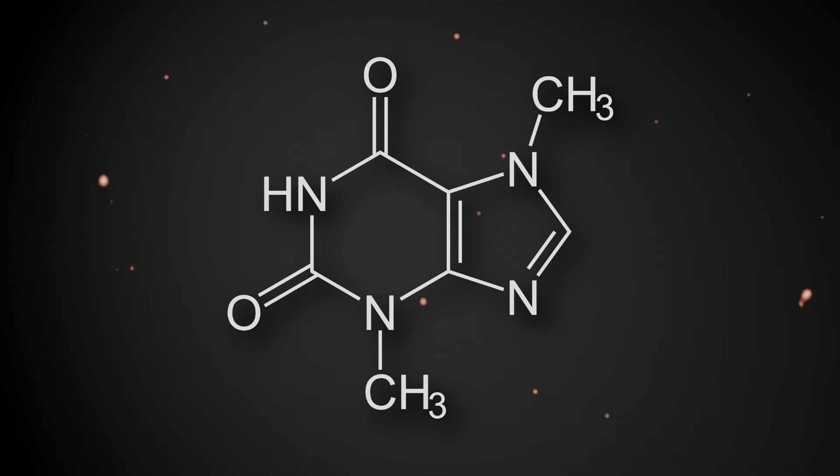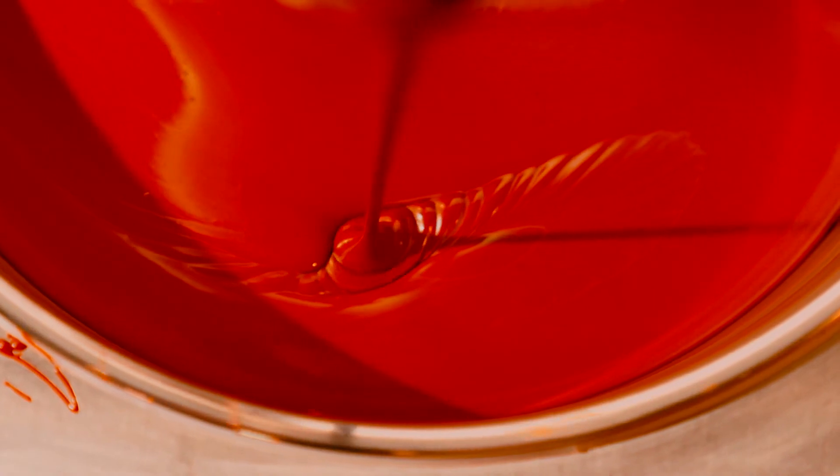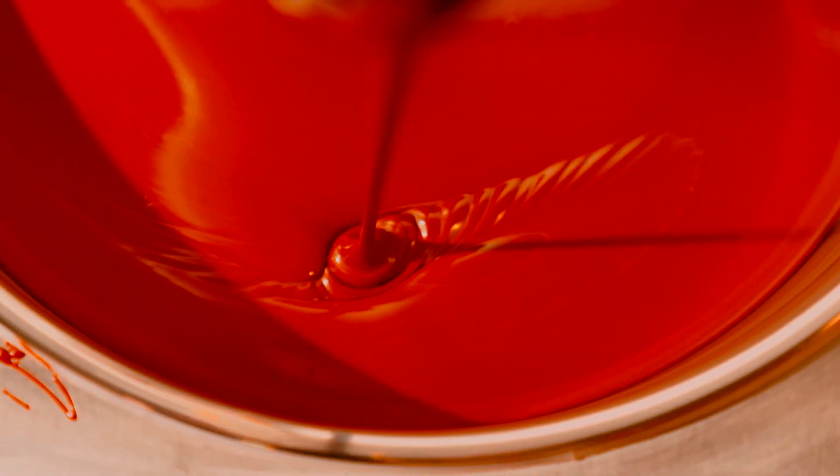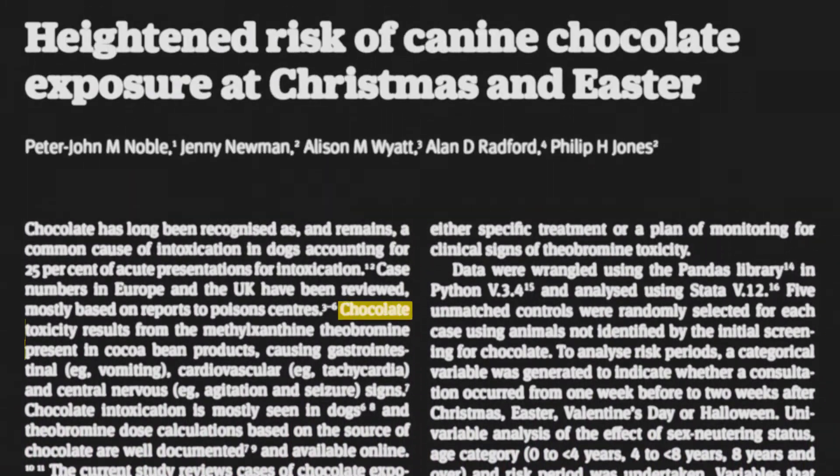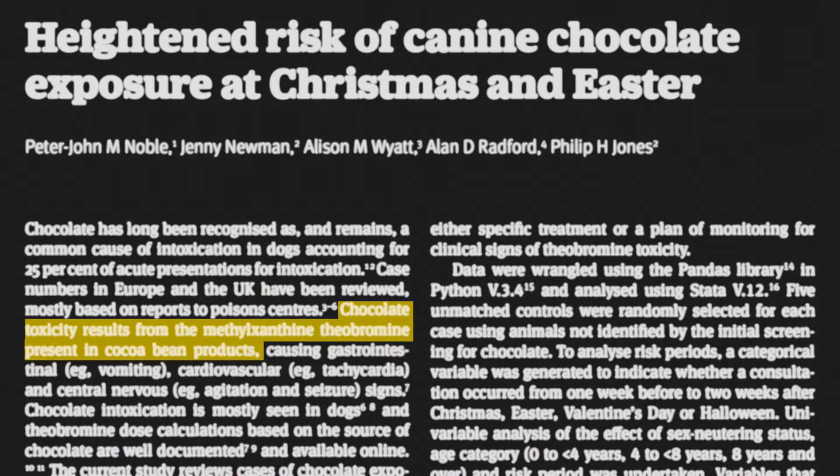Just like caffeine, theobromine is a stimulant that is present in plants, and most notably cacao leaves, meaning it is found in all of the chocolate that we consume. Interestingly enough, it is the reason that dogs are allergic to chocolate, because they can't metabolize theobromine quite as fast as humans, and it can become toxic at high levels.